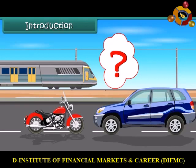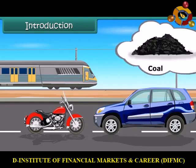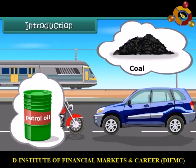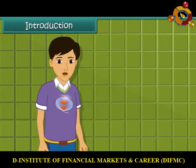They get their energy from fuel. The fuel can either be coal or petroleum product. They provide energy for vehicles to move. In this module, we are going to learn more about these natural energy resources.